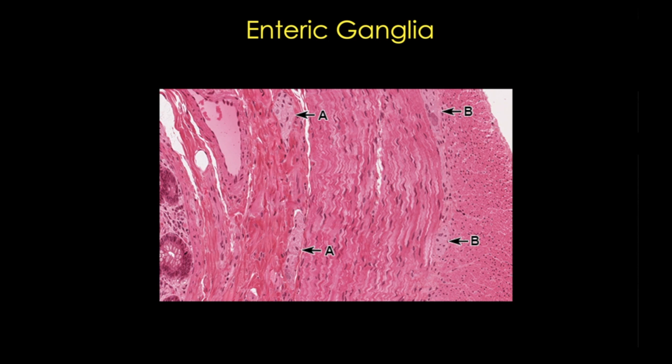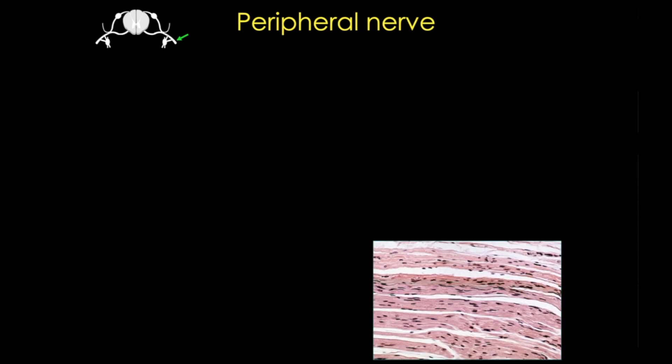Peripheral nerves contain axons of both sensory and motor neurons. These are associated with Schwann cells, and the larger nerves are myelinated. Here I have a longitudinal H&E section, and these nerves have a very pale appearance — paler than smooth muscle — and they're kind of wavy. Note that these are axons, so all those nuclei that you see are actually Schwann cell nuclei.